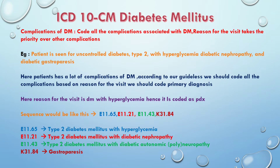PDX is primary diagnosis and NSDX is secondary diagnosis. So the sequencing is E11.65, E11.21, E11.43, K31.84. E11.65 is type 2 diabetes mellitus with hyperglycemia. E11.21 is type 2 diabetes mellitus with diabetic nephropathy. E11.43 is type 2 diabetes mellitus with diabetic autonomic polyneuropathy. K31.84 is gastroparesis. Patients have multiple complications.